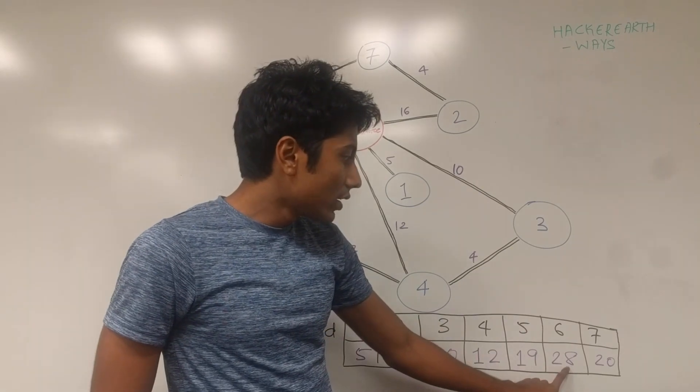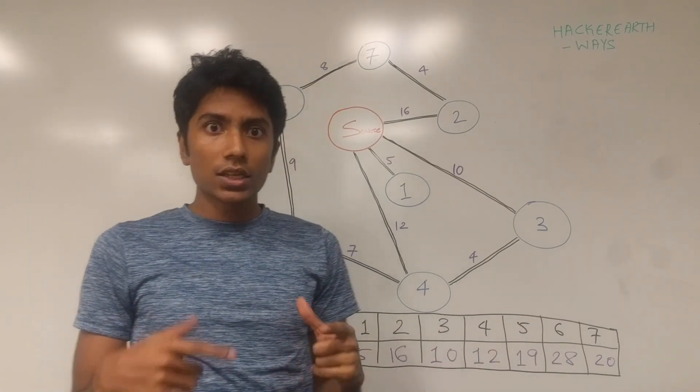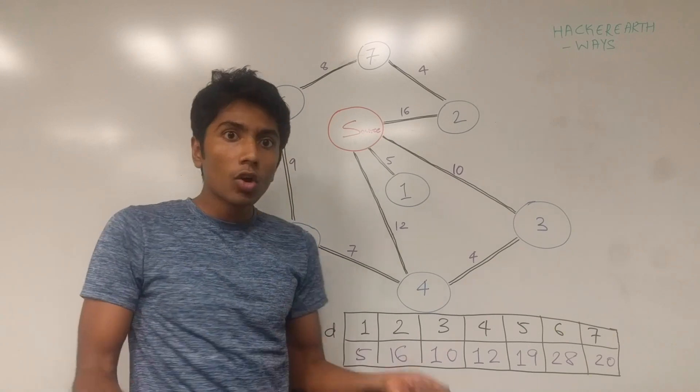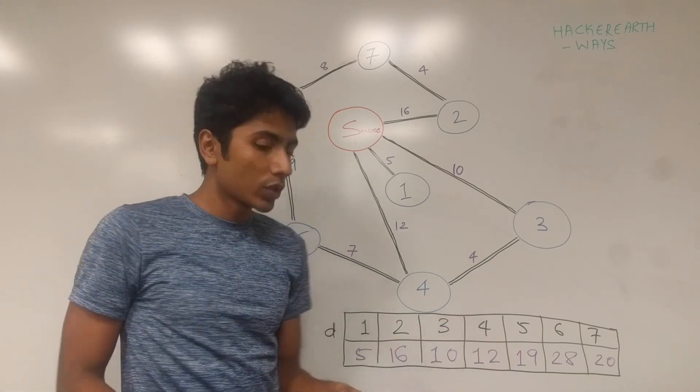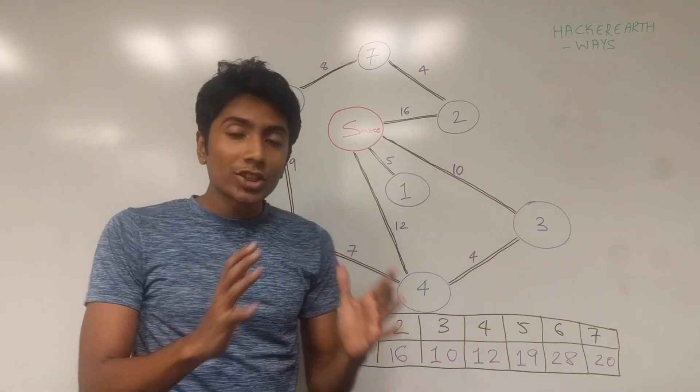The interesting thing here is 6 which is and the distance 28 can be got through two different ways. So how do we actually note that down?